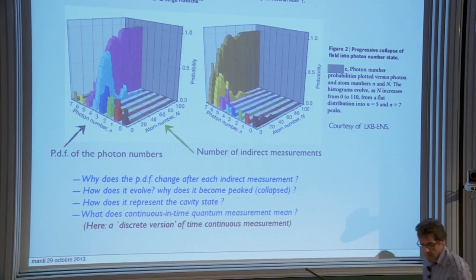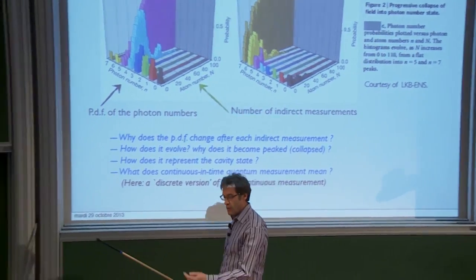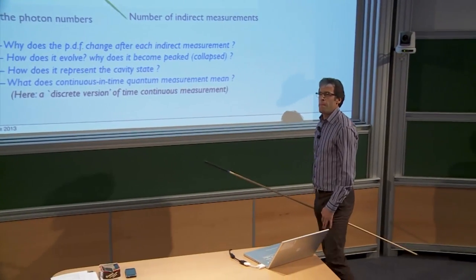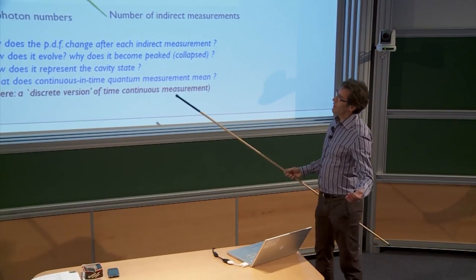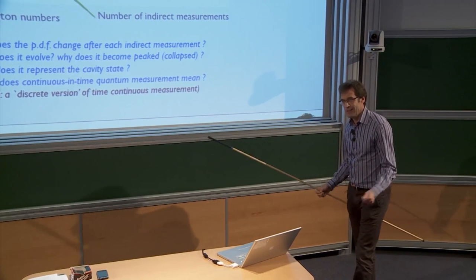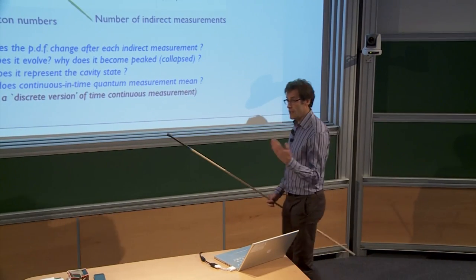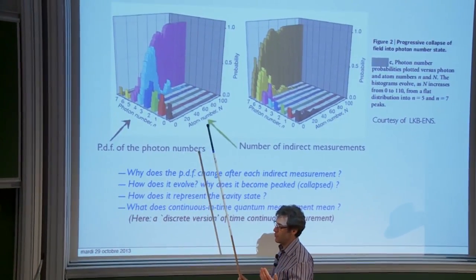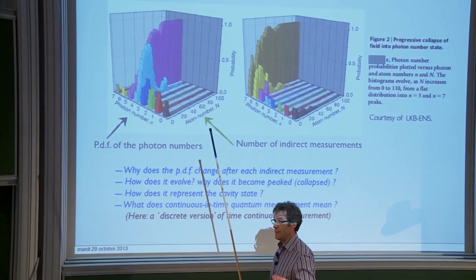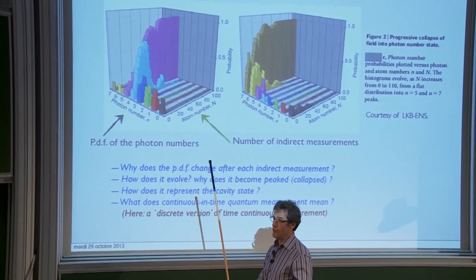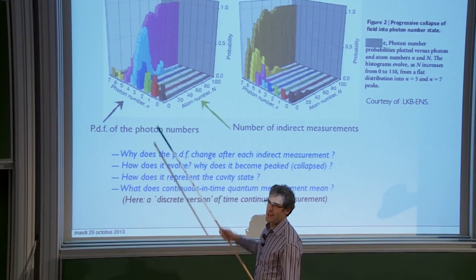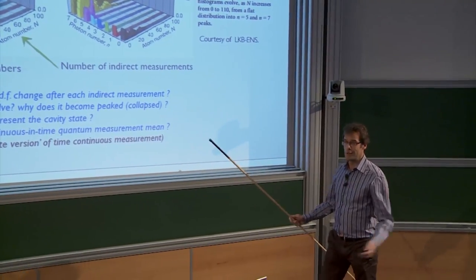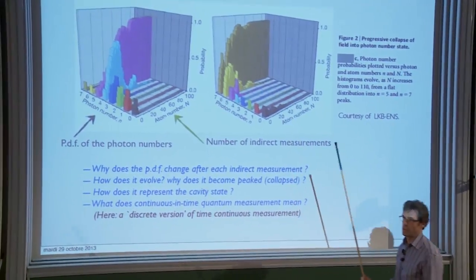A question arises: what do we mean by faithful representation? Inside the cavity you have some state, and from that state you get some probability distribution function. You have two probability distribution functions — the true one inside the cavity (which you don't know) and the one you estimate. Do these two distribution functions coincide? In general, no — they only coincide at the end of the process.